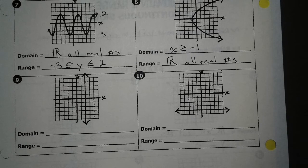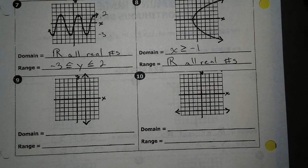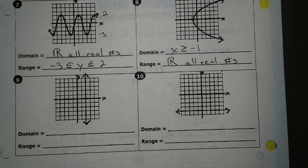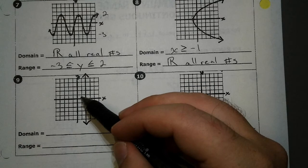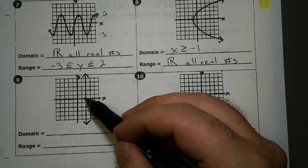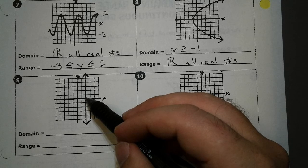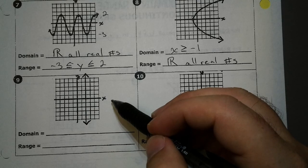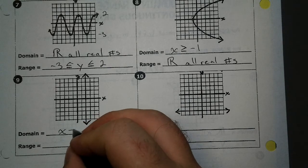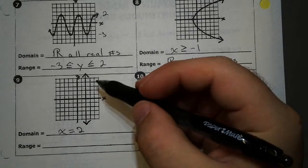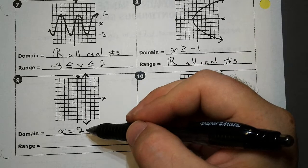All right, now let's look at number 9. Number 9 looks kind of interesting because it's just a straight line going up and down. Our domain is our x values. Go over here, 1, 2. And do I have any x value other than 2? Can I go left or right? No, I can't. So this one is just x equals 2 because there are no other values for my x.